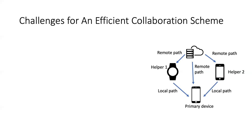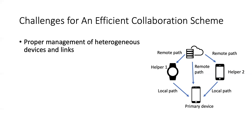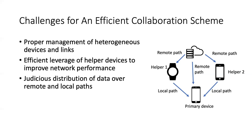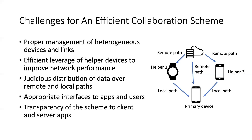This may sound intuitive. However, we face numerous challenges when designing and implementing such a system. For example, how to properly manage heterogeneous devices and local wireless links, how to strategically leverage the proper devices to improve network performance, how to design a robust multipath scheduler that considers both remote paths and local paths — with the latter being unique in our problem setting — how to expose appropriate interfaces to users and applications, as well as how to make the system transparent to client and server applications.